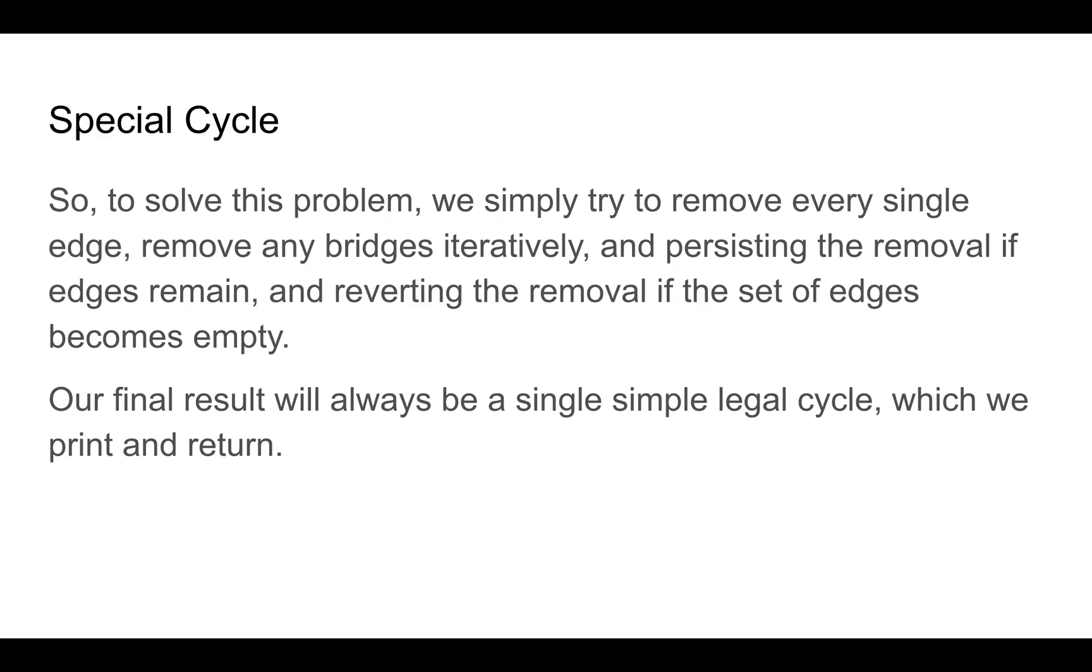But if there's a smaller two-connected graph that returns, we can know that we can delete that edge and just continue the process. The final result will always be a single simple legal cycle, which we simply print and return.